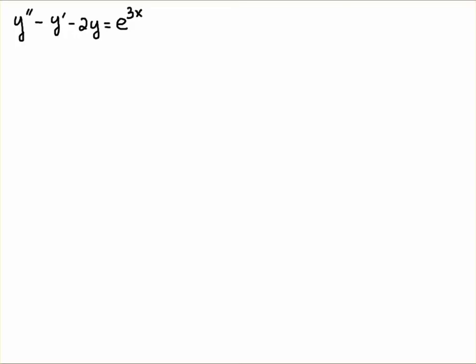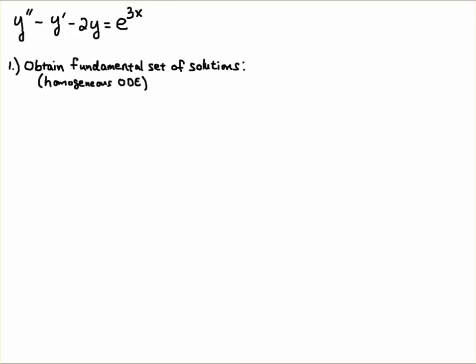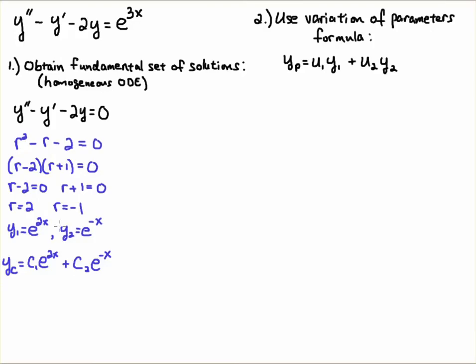We begin by first considering the homogeneous ODE. In the parlance of differential equations, we're going to obtain a fundamental set of solutions. The way we do that is we solve the homogeneous ODE. Homogeneous means that when we move all the dependent variables — all the y's — to one side, what we have left on the right hand side is zero. This equation up here is non-homogeneous; we have a non-zero term on the right hand side.